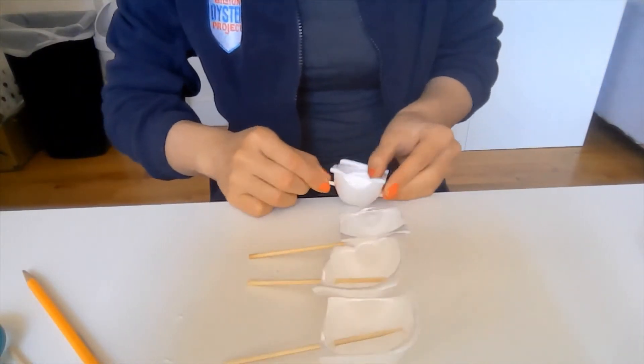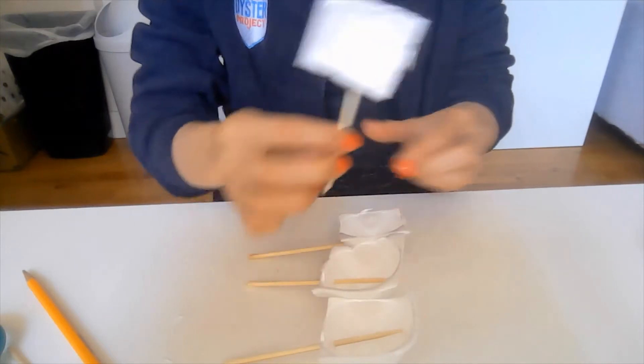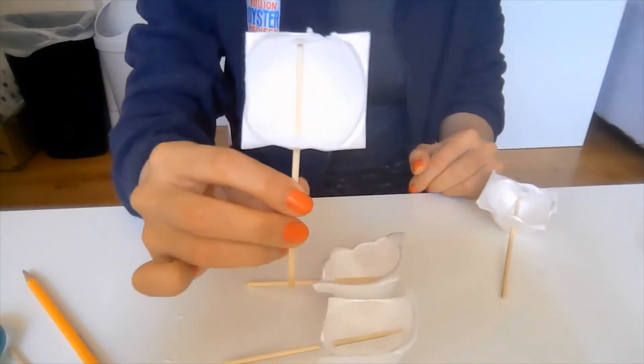Once you're done inserting the toothpicks or the skewers into the egg carton cups, they should look something like this.